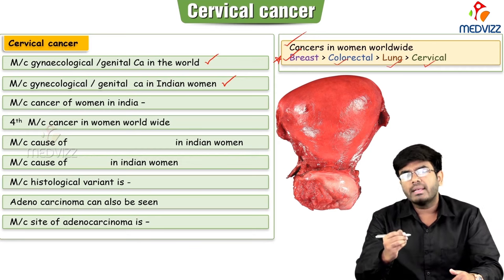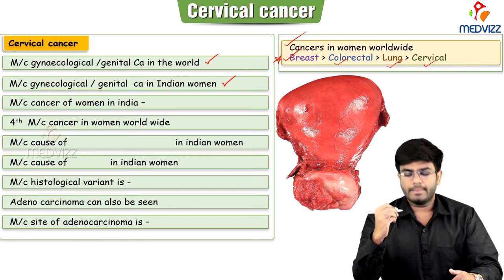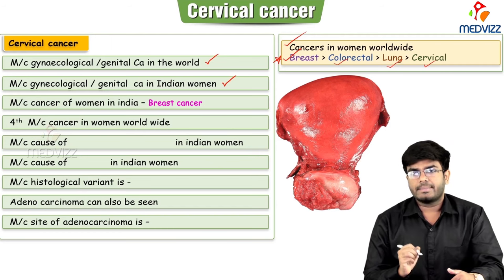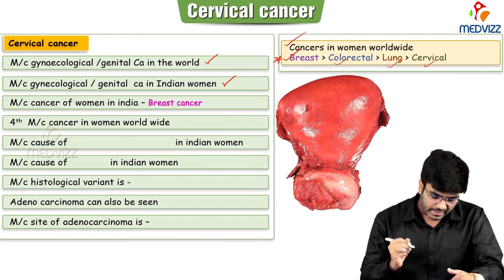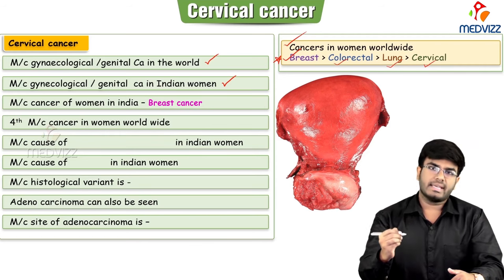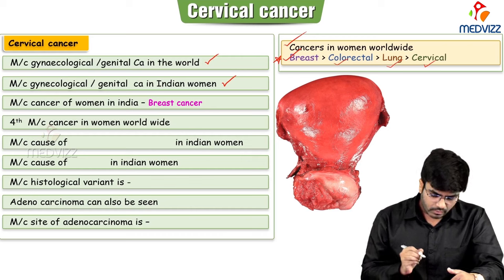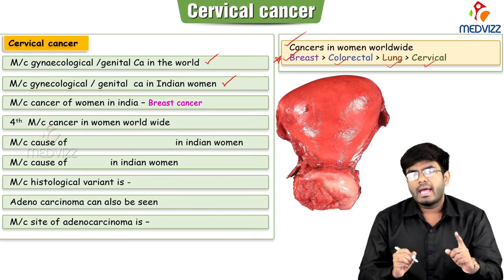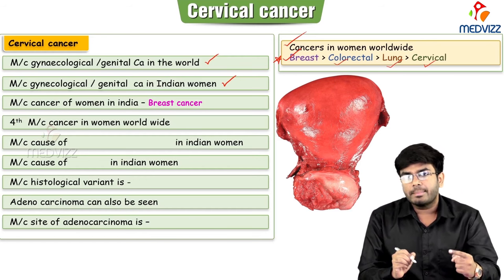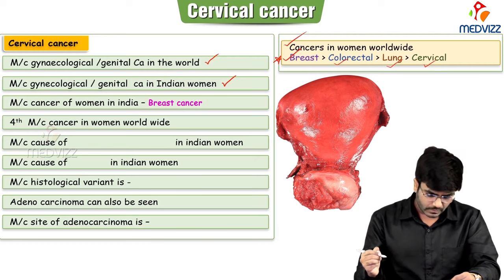If talking about genital cancers, cervical cancer is first. But overall, breast cancer is the most common cancer. In India specifically, the most common cancer in women is also breast cancer. Fourth most common cancer among women worldwide is cervical cancer.